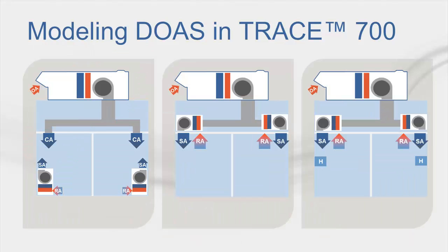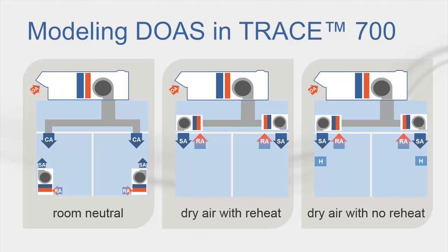I will now walk through three scenarios for modeling dedicated outdoor air systems in TRACE 700. First, outdoor air cooled to a room neutral temperature without dehumidification. Second, conditioned air that is drier than the space air but reheated to a room neutral temperature. And lastly, outdoor air conditioned to be drier than the space without any reheat.